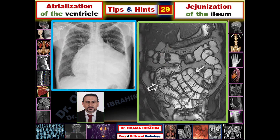Good day, welcome to a new presentation in easy and different radiology. This is presentation number 29 from tips and hints about the jejunization of the ilium and the atrialization of the ventricle — in other words, changing of the mucosa in some tissues. This presentation will be short and fast, so let's start.